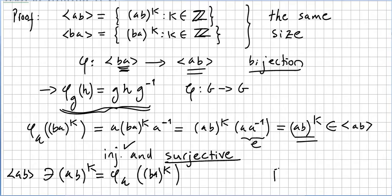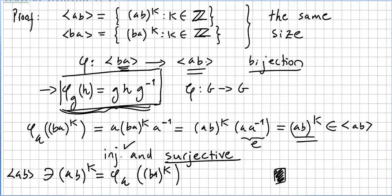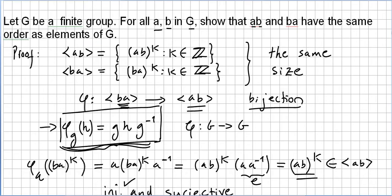This concludes the proof. At the end of the day, once you already have the tool that φ is a bijection, this proof really takes just two steps and it is done. So in a finite group, for all elements a and b in G, the order of ab will always equal the order of ba. Thank you.